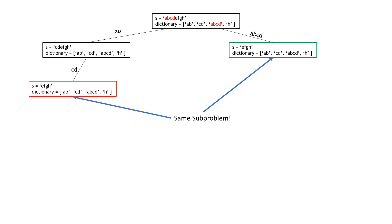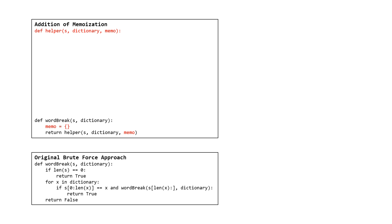Our memo should hold the subproblems — the strings S which have already been solved — and tell whether solving that subproblem resulted in true or false. Our memo is going to be a hash map mapping strings as keys to booleans as values. To implement this, we define a helper method which, in addition to the original parameters, takes in a hash map. We then call this helper from the original word break method, passing in the original string, the word list, and our hash map called memo.